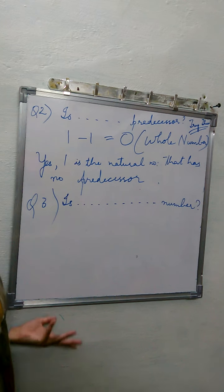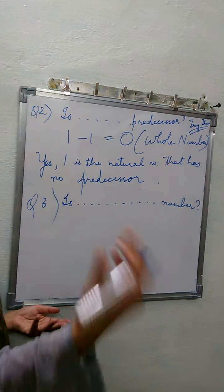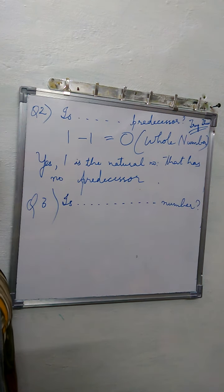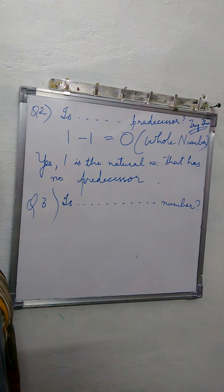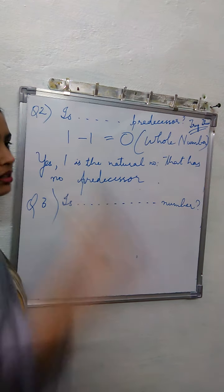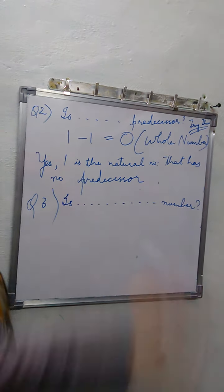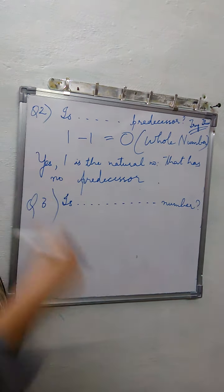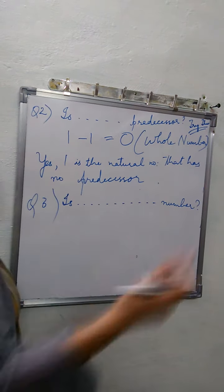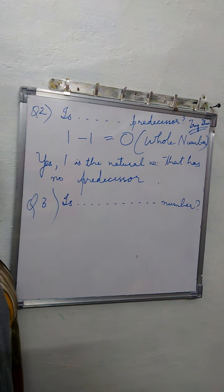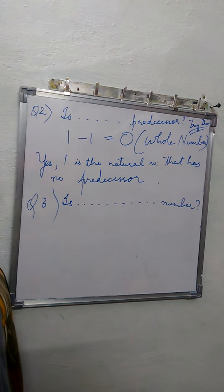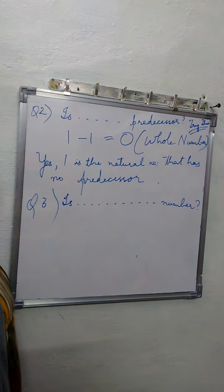If I ask you, can you count the number of stars? Is it possible? No. Why? Because we have countless stars — you cannot count them. We don't know the last natural number. So that means every natural number has a successor.